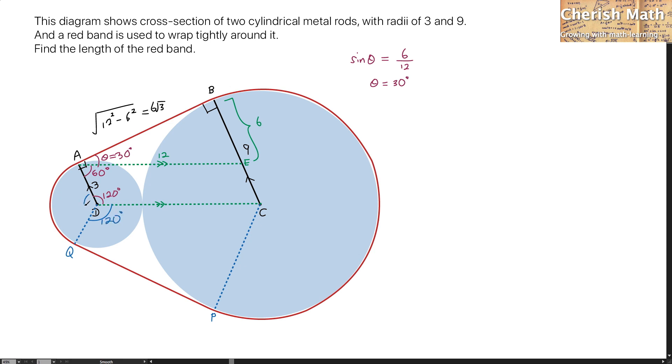And for this part, ADQ, it is by using 360 degrees minus 120 minus another 120 degrees, that is going to form 120 degrees.